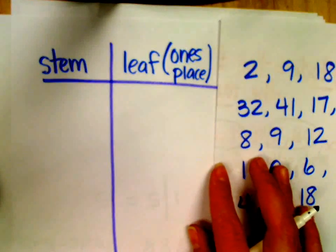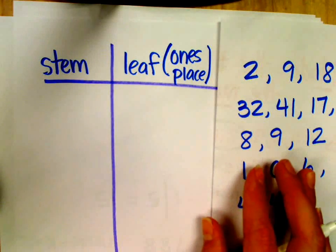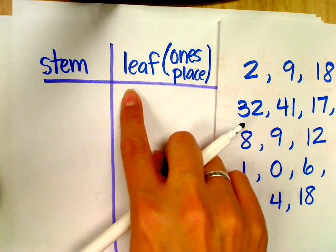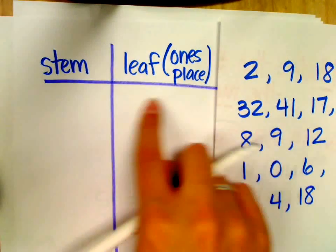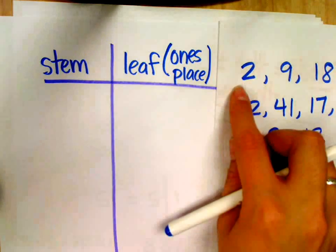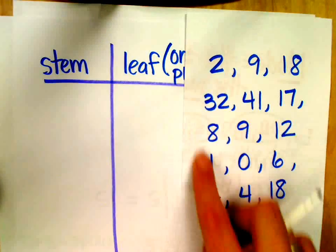So go ahead and write that on there so you don't forget. Always your ones place. So for a stem and leaf plot, I could put numbers in the thousands if I wanted to, but there's only going to be numbers in the ones written here. So, for example, if I take my first number, is that my smallest? Nope.